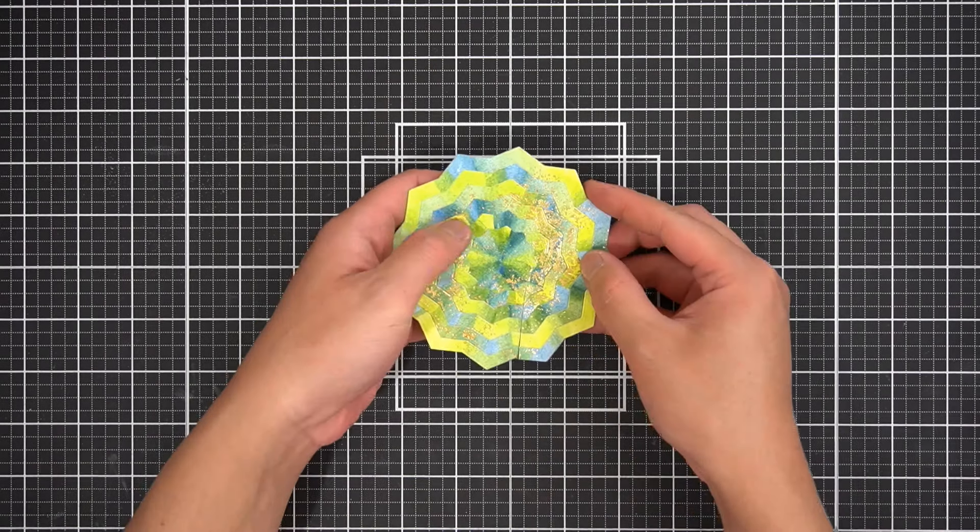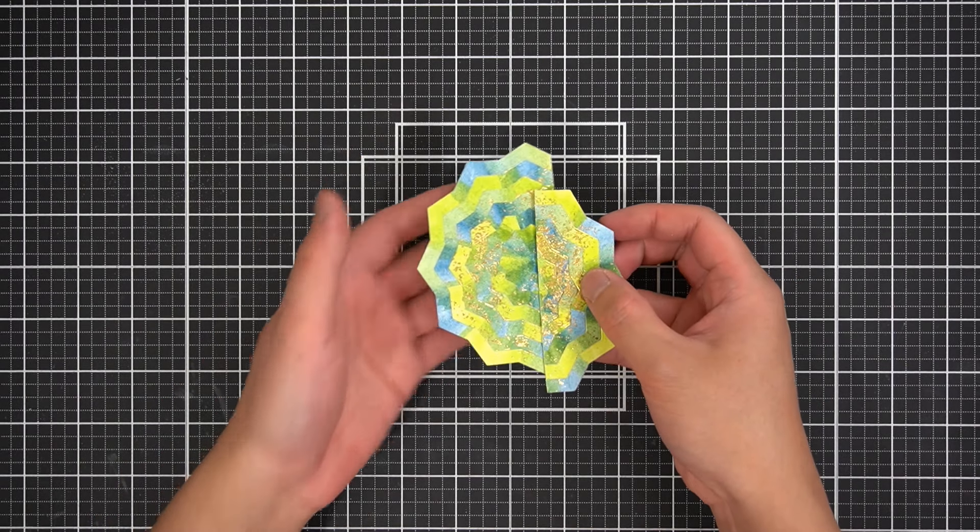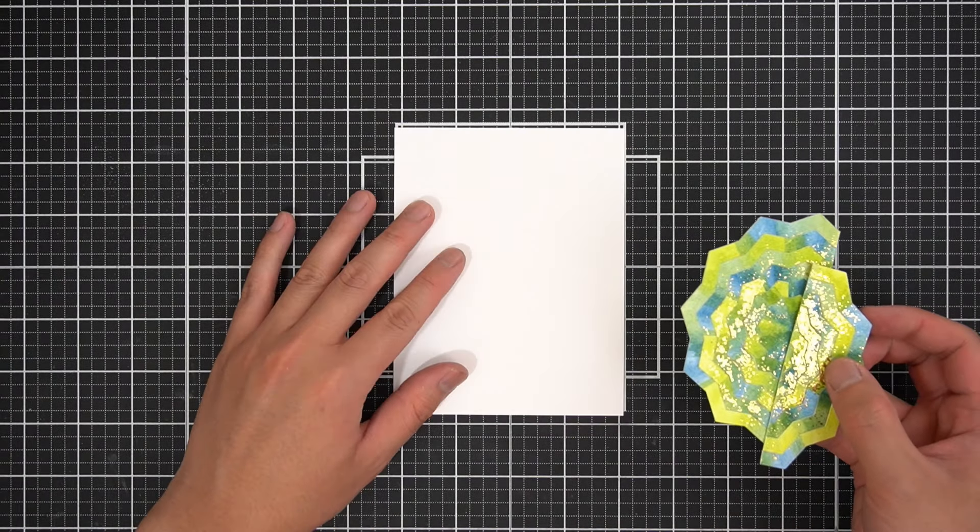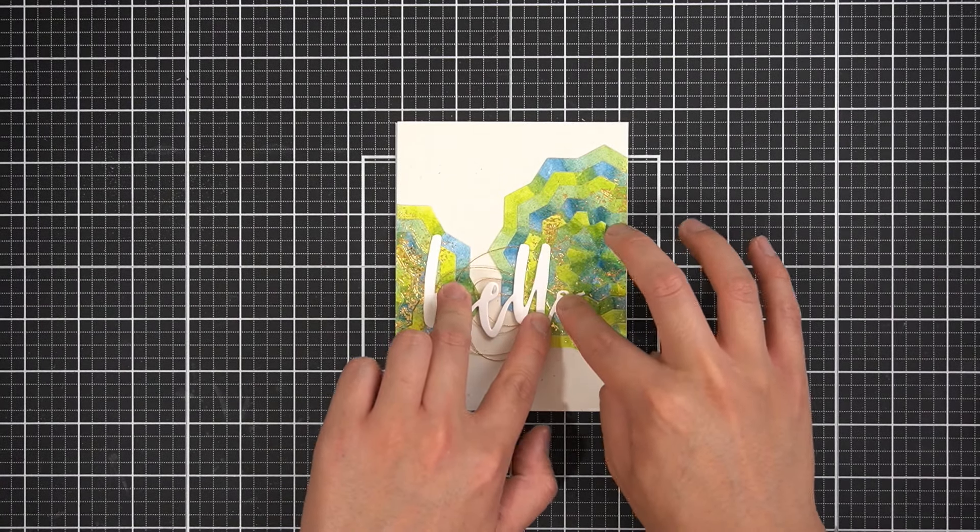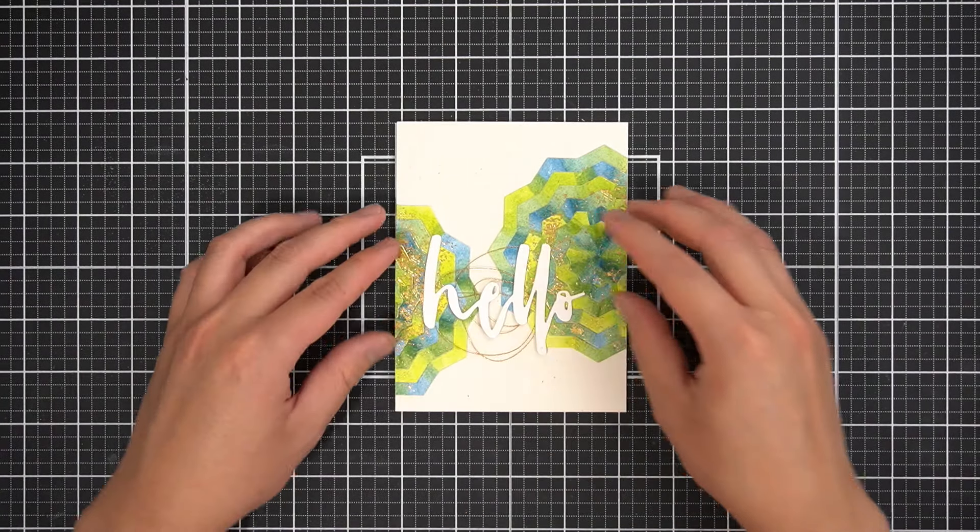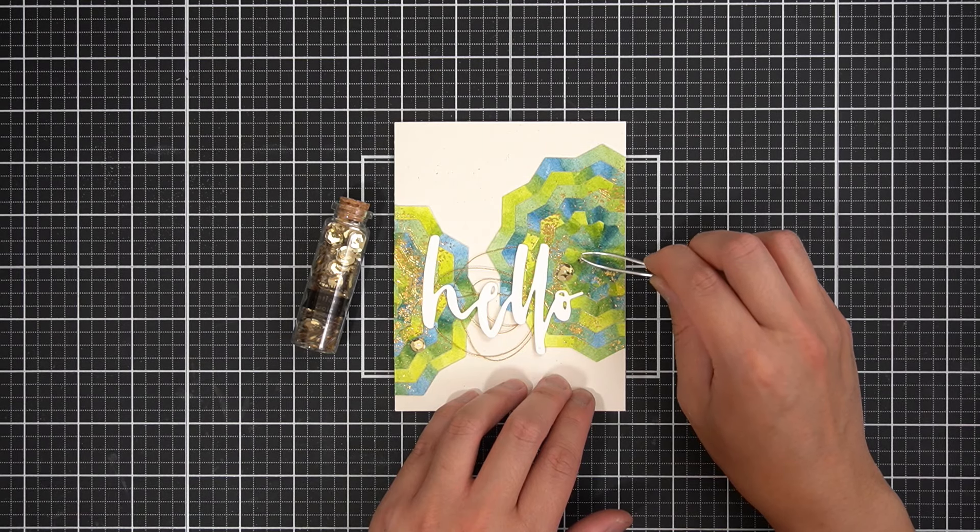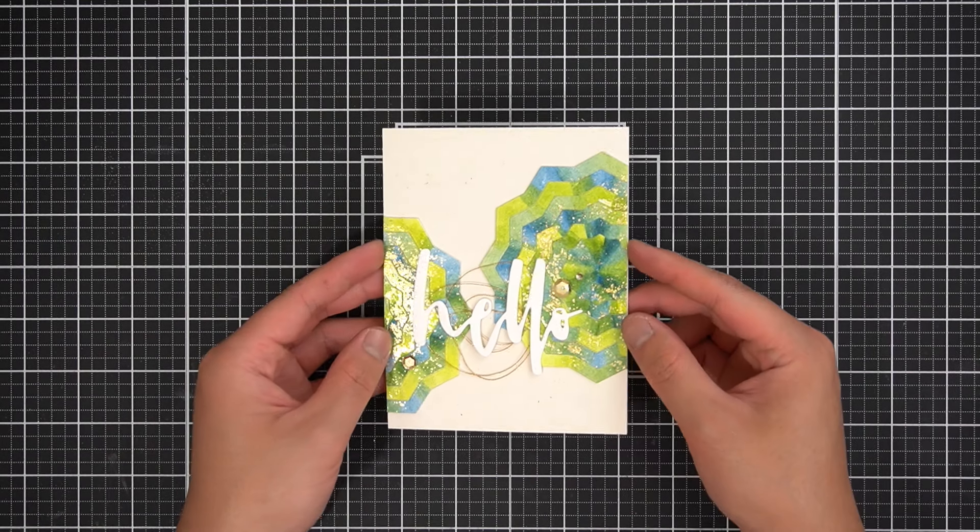For the second card, I asymmetrically cut the tie-dye panel and adhered them on opposing sides of my card front. Then I stacked die cuts of the waterbrush hello die on top of a bundle of Altenew metallic thread. I finished this card with a few coordinating sequins for an all die cut card.